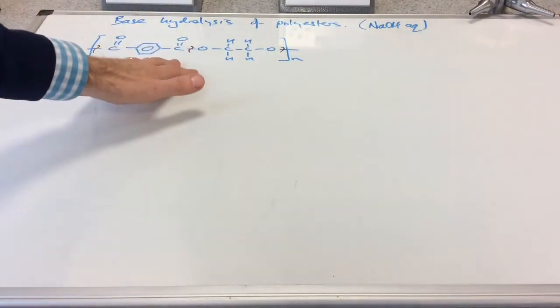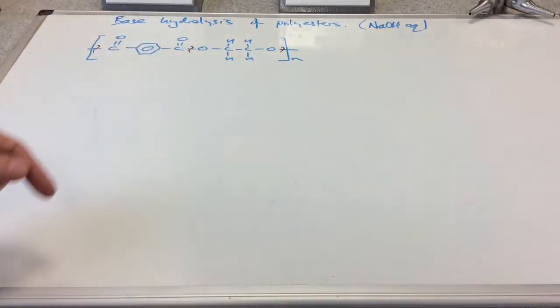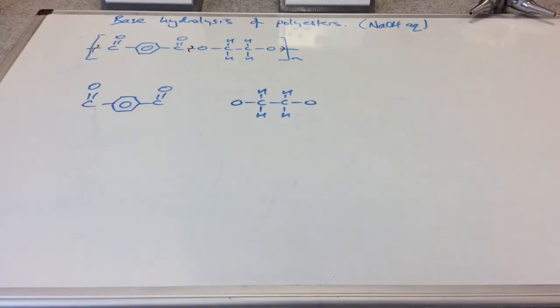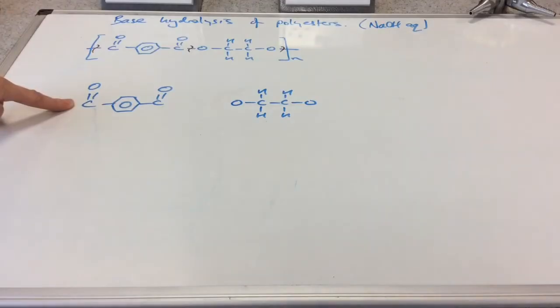There's our repeat unit. I've already indicated the bonds that are going to break - the ester bonds. Let's have a look at what's formed. Simply pulling the repeat unit apart would generate these two things. What's going to form at either end of this C double bond O?